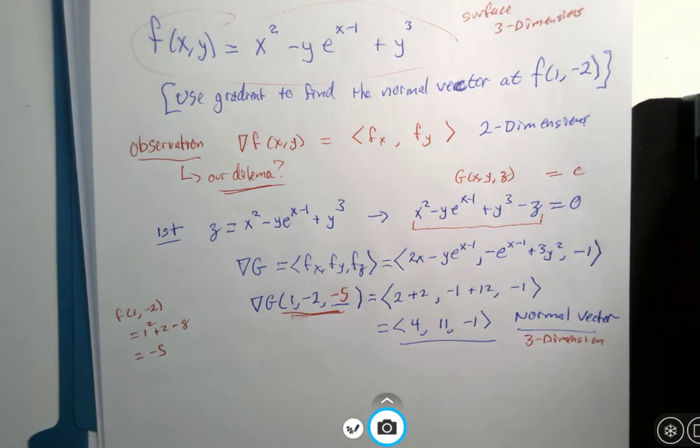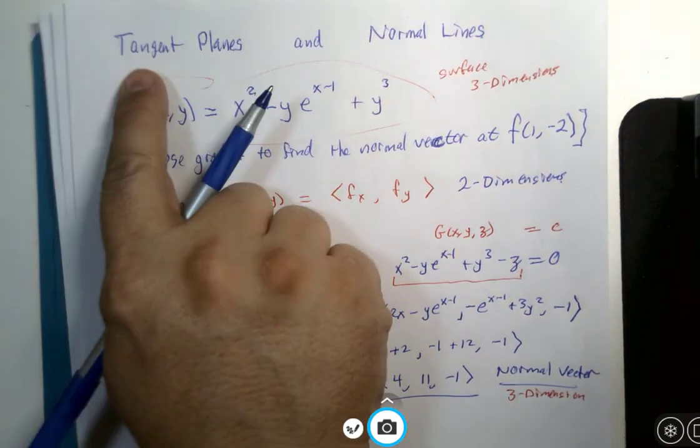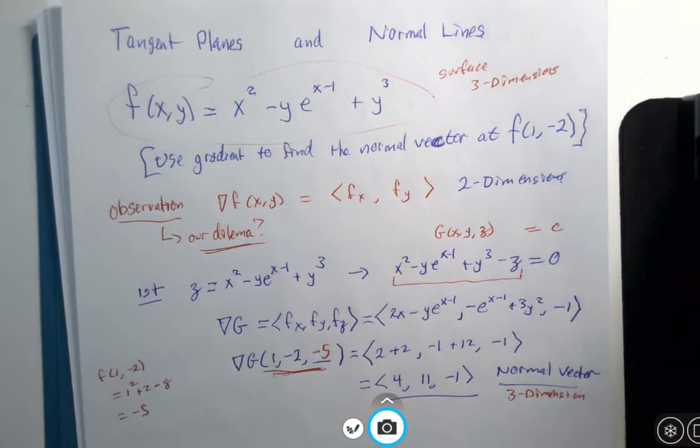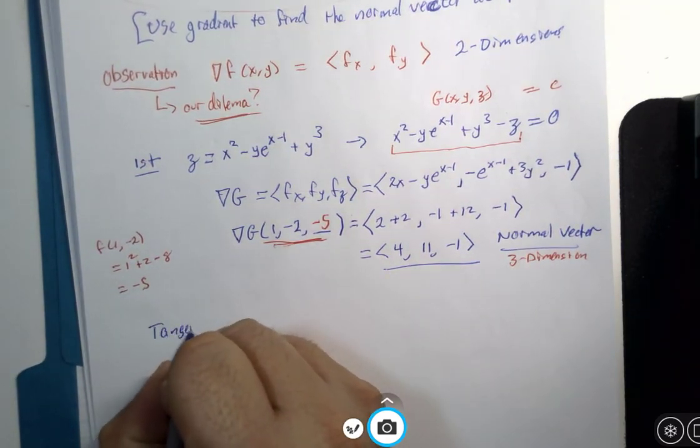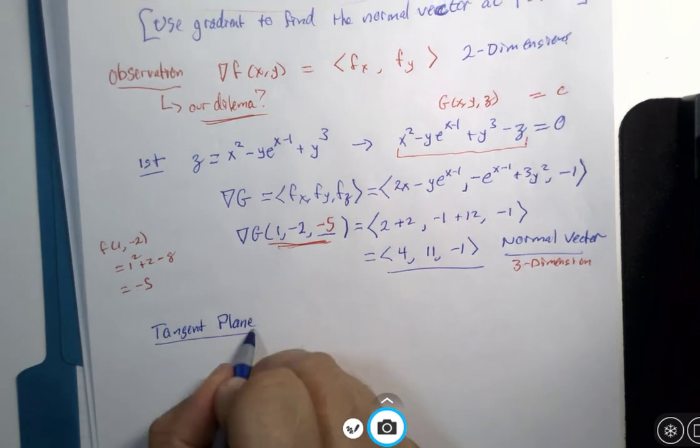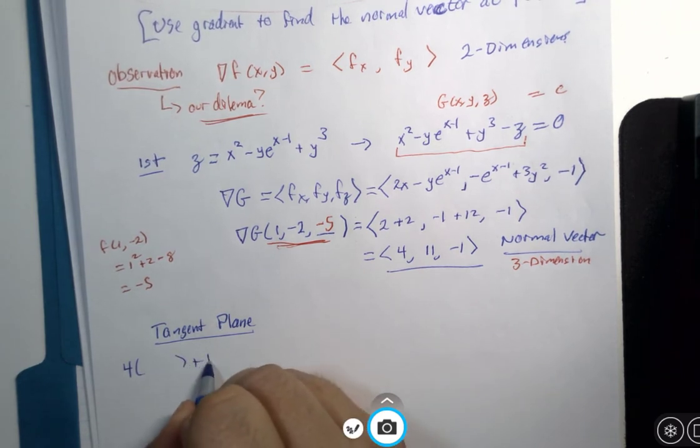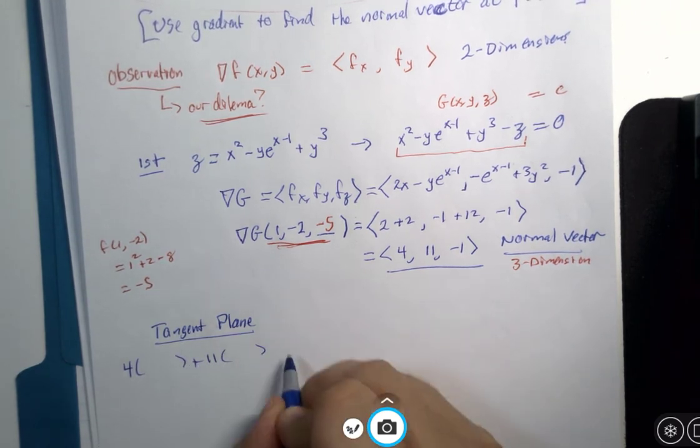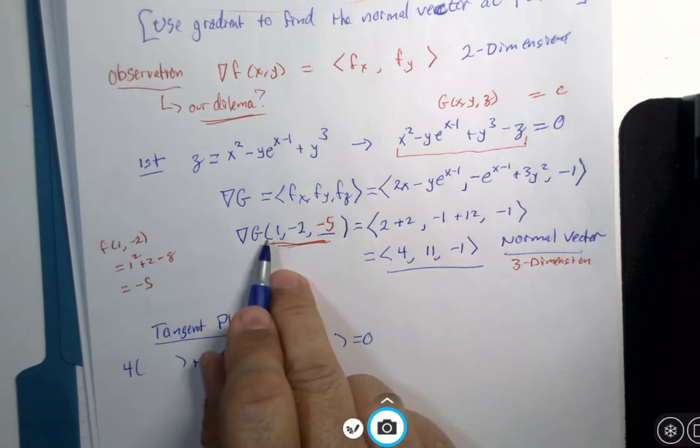Now I step back and remind myself, what was it I was going to try to find? Well, I was going to write the equation of a tangent plane. The tangent plane to that unseen three-dimensional surface, I have my vector, 4, 11, negative 1 equals 0.